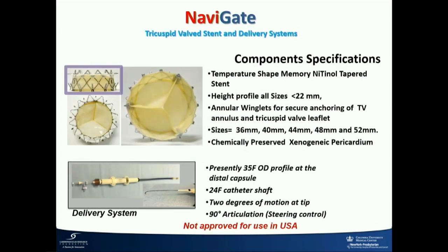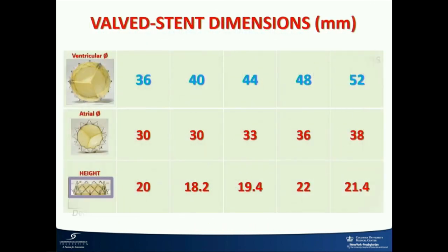Some of the important design features of this device: it's a relatively short device, which is quite important. There are tines on the ventricular side which engage with or go around and between the chordae, and that stabilizes the device. On the atrial aspect, there is a small brim which keeps the device exactly in the AV groove. The delivery system is fairly primitive, as it's an early first-generation device and is fairly large in size. This device comes in various sizes and was initially designed for mitral but has been applied mainly in the tricuspid area.